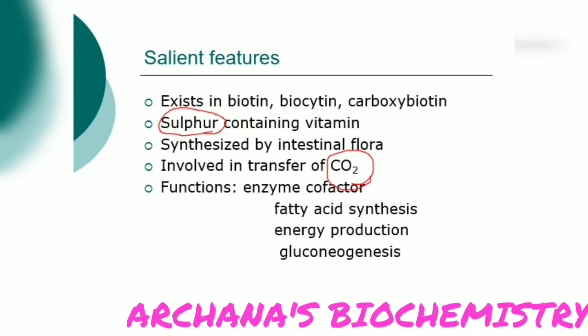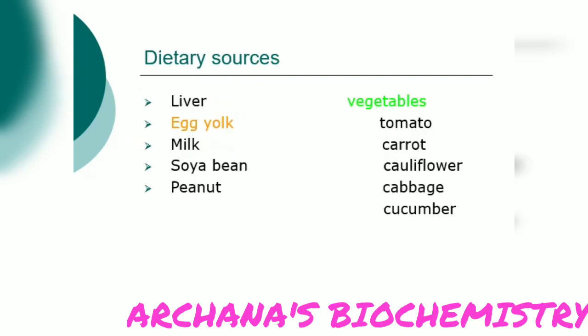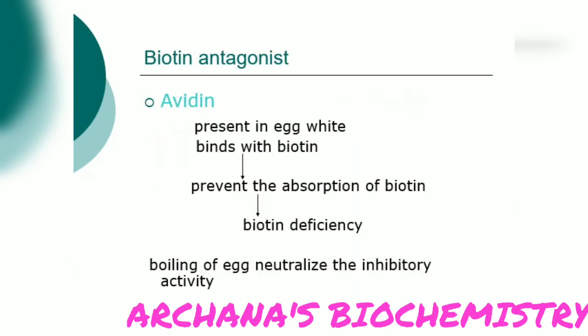The functions of biotin: it acts as an enzyme cofactor for fatty acid synthesis, energy production, and gluconeogenesis. This is the basic structure of biotin with an imidazole ring and a thiophene ring with a valeric acid attached to it. The rich dietary sources of biotin are egg yolk, milk, and egg. Other sources are soya bean, peanut, liver, and vegetables.